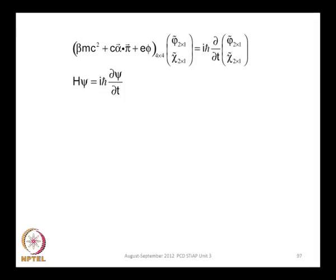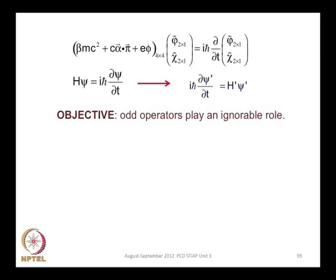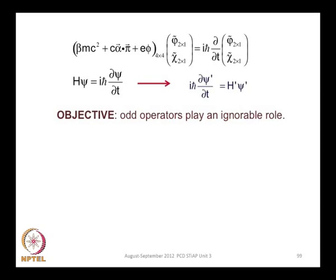What one hopes to do is to transform the Dirac equation. The equation H psi = (h-bar) d(psi)/dt is the Dirac equation, and we subject it to a transformation to the primed representation, which is the Foldy-Wouthuysen representation. In this representation, we hope that the odd operators will still appear but be less important than in the original unprimed representation — for example, scaled by a factor of 1/m. That is the strategy, following the technique introduced by Foldy and Wouthuysen.